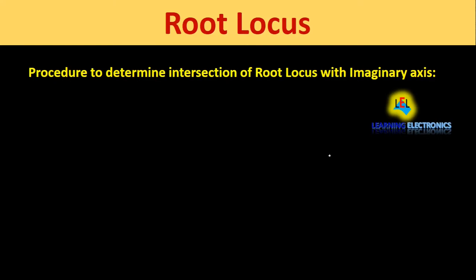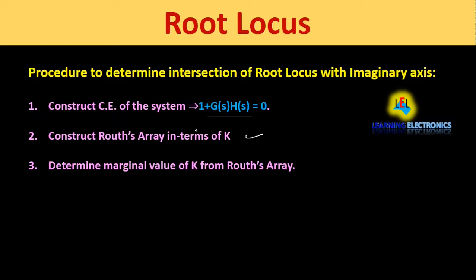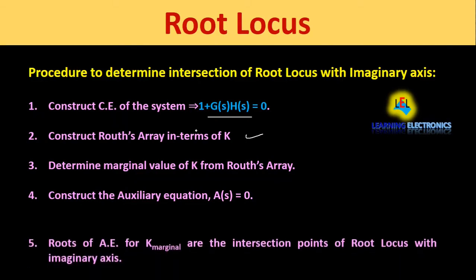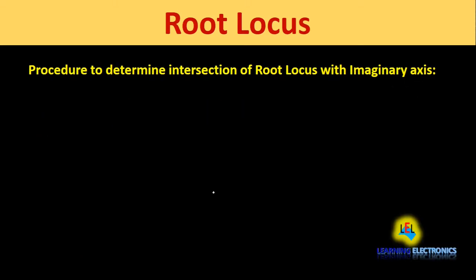Now we will study the procedure to determine the intersection point of root locus with the imaginary axis. Step 1: construct the characteristic equation 1 + G(s)·H(s) = 0. Step 2: construct the Routh array in terms of k. Step 3: determine the marginal value of k that makes one row of the Routh array a row of zeros (except the s⁰ row). Step 4: construct the auxiliary equation A(s) = 0 using coefficients of the row just above the row of zeros. Step 5: find the roots of the auxiliary equation for k_marginal — these are the intersection points of the root locus with the imaginary axis.